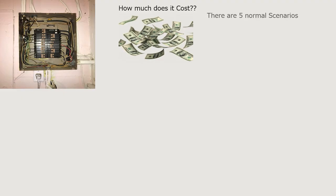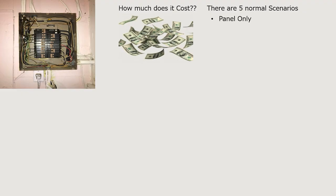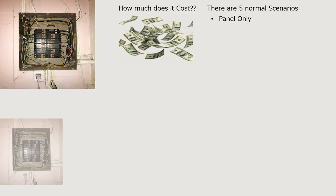There are five normal scenarios. Now there are a lot of abnormal scenarios where you have to move it out of a closet or out of a space where it's not supposed to be, but we're going to talk about five normal scenarios that are pretty typical. You can base any abnormal situation off of these prices.